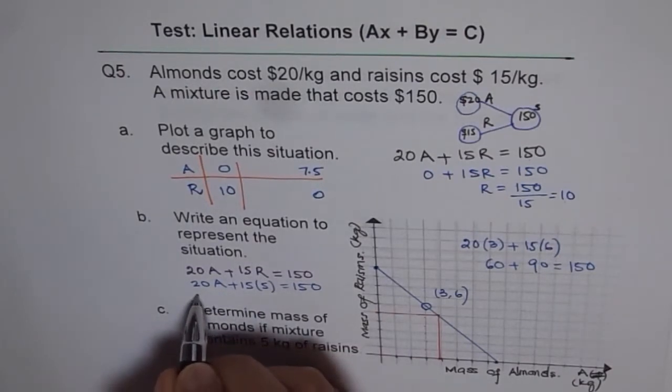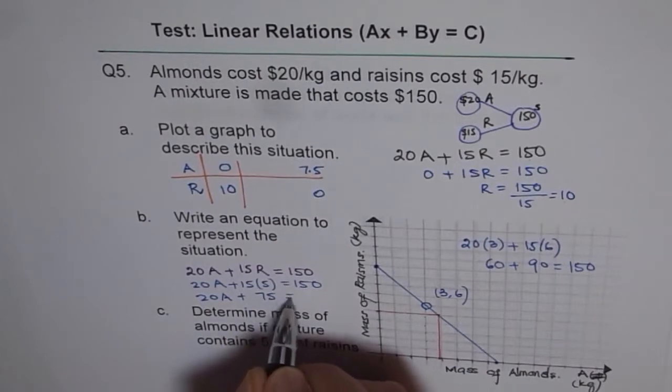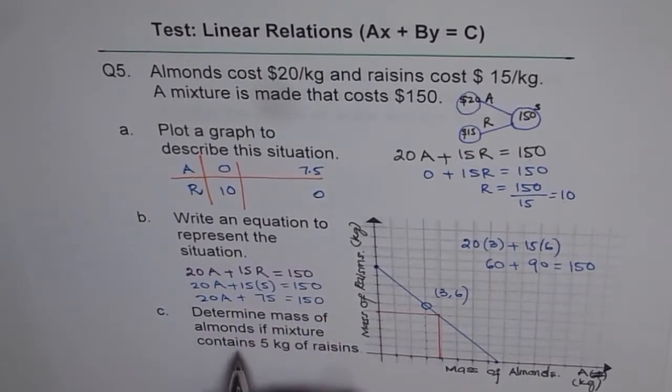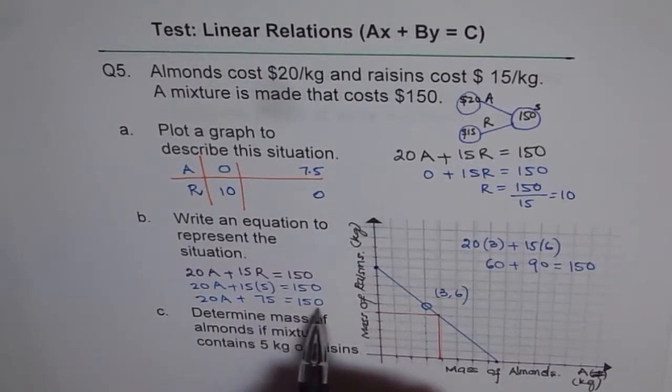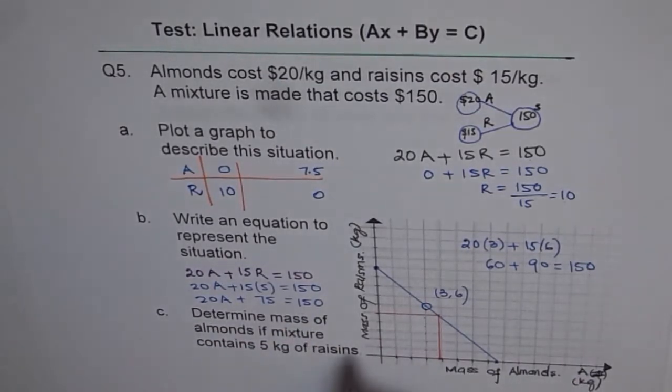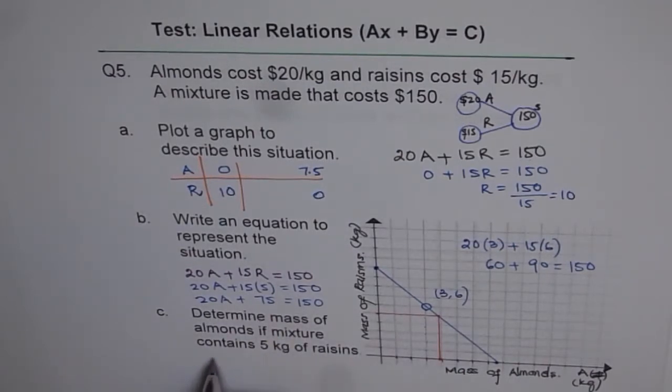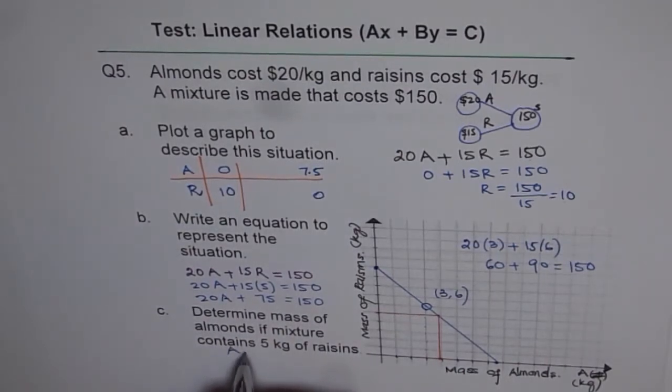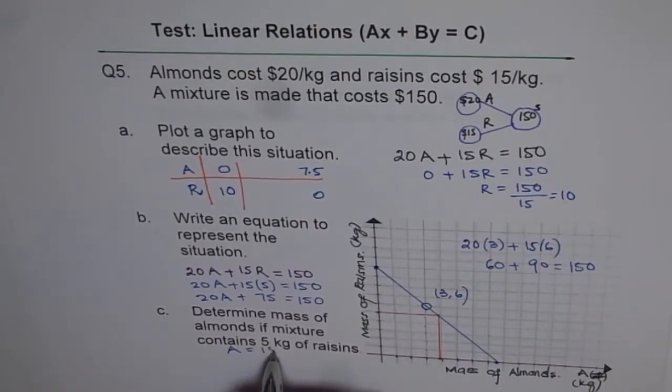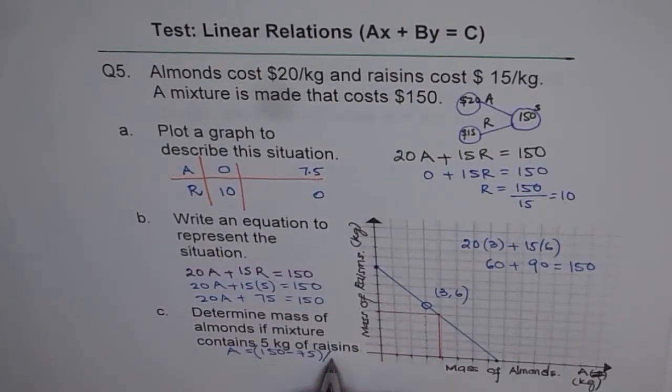So we have 20 times A plus 75 equals 150. Now from here we can take away 75 and divide by 20 to get our answer. So we'll calculate A as: A is equal to 150 minus 75, I'll put them in brackets, and divide by 20. And then we get our answer.